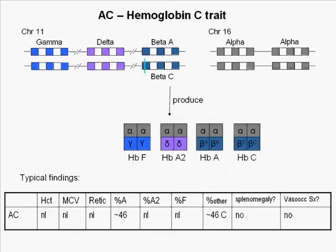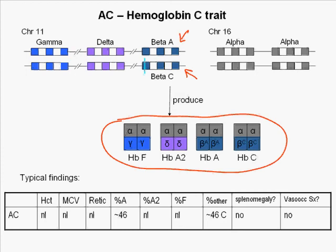In AC or hemoglobin C trait, one beta globin gene is normal and the other carries the hemoglobin C point mutation. Four hemoglobins are produced: small amounts of hemoglobins F and A2, with the balance made up of hemoglobins A and C, which are roughly found in equal amounts.